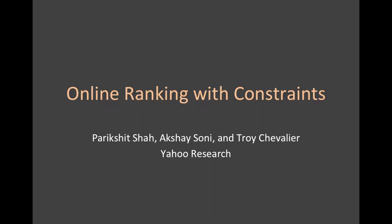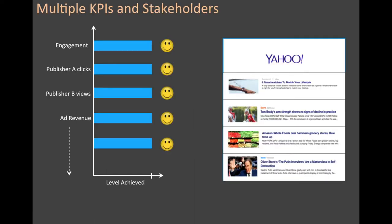I'll be talking about the online ranking constraints problem. Suppose you're running a web portal where you have users who visit your website. You present the users with a ranked list of items and the users then click and engage with these items. What kind of KPIs might you care about?